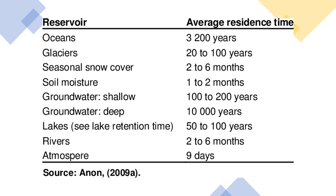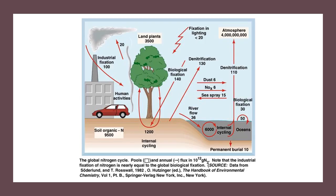The average residence time of water in the oceans is around 3,200 years. In the atmosphere, the residence time of water is only around nine days, meaning water is precipitated in the form of snow or rainfall within nine days.